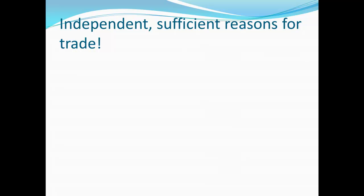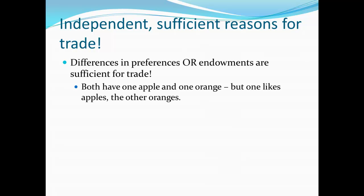The difference in preferences and the difference in endowments are actually independent, sufficient reasons for trade. In our first example, they were both present. To prove this, suppose we have two people where both of them have one apple and one orange — the endowments are absolutely identical. But one of these people loves apples and the other loves oranges. Despite the fact that endowments are identical, there is still a reason for trade. Differences in preferences alone is enough to allow for trade.